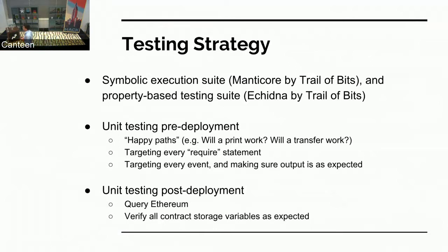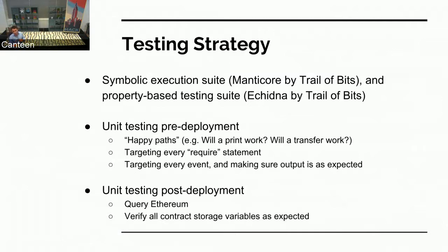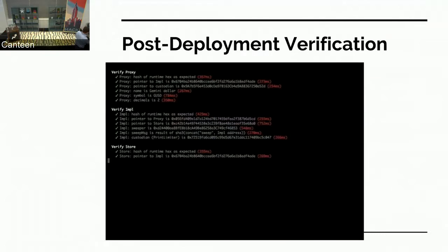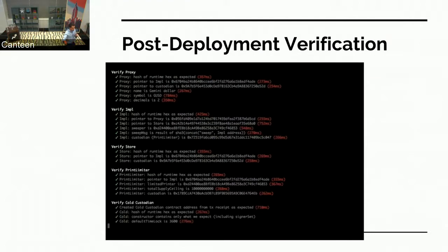We had a unit testing suite. Not only did we check the happy paths, but it's also important to hit every single require statement — anytime there's a require, you should try to hit it and make it throw. Your eyes play tricks on you because you'll catch things you never thought you'd catch by doing that. Every event, we made sure the output was as expected. After we published the contracts, we'd query the blockchain state to make sure all the storage values and pointers between contracts were as expected as well.